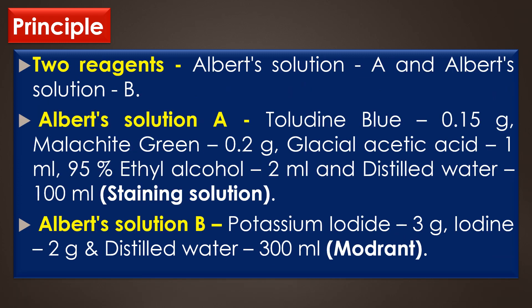Two types of reagents are used in the metachromatic granule staining process. They are Albert solution A and Albert solution B. Albert solution A consists of toluidine blue, malachite green, glacial acetic acid, and ethyl alcohol. Albert solution A acts as the staining solution.